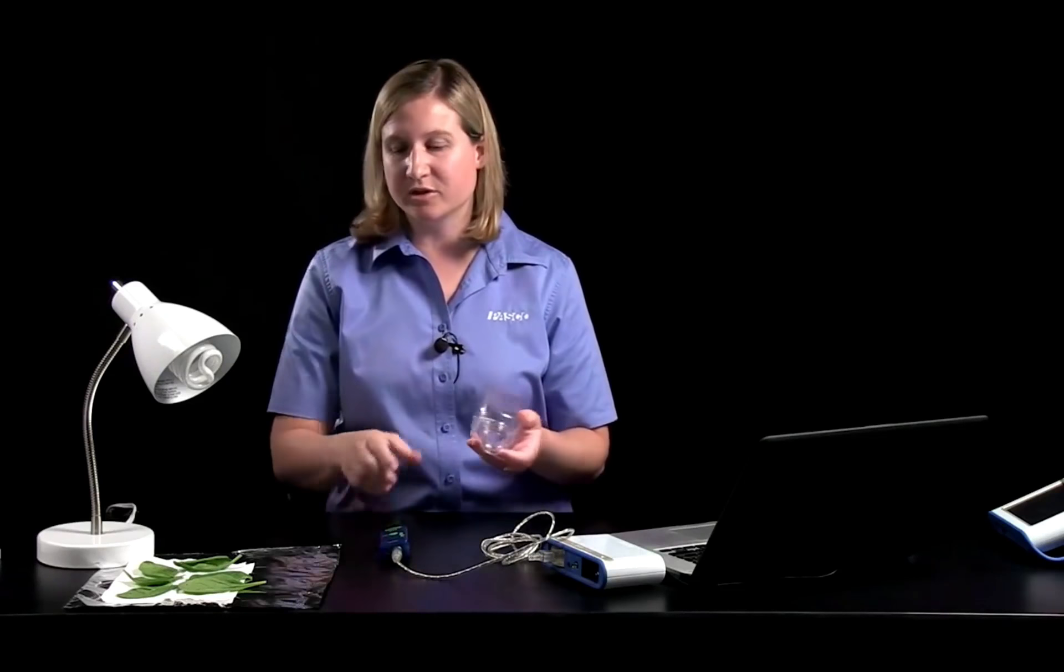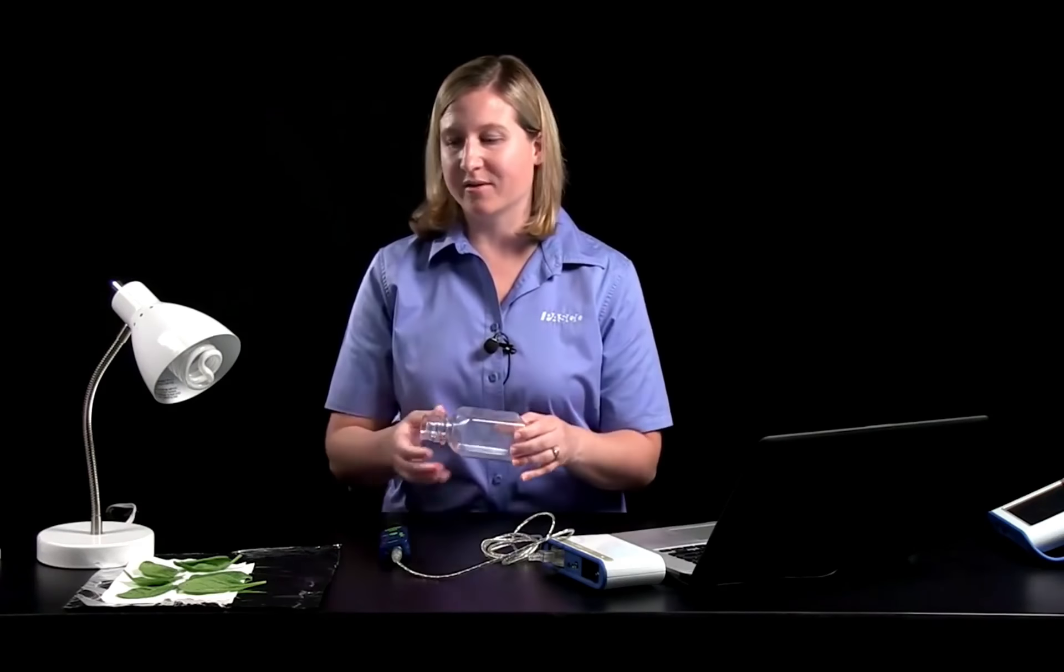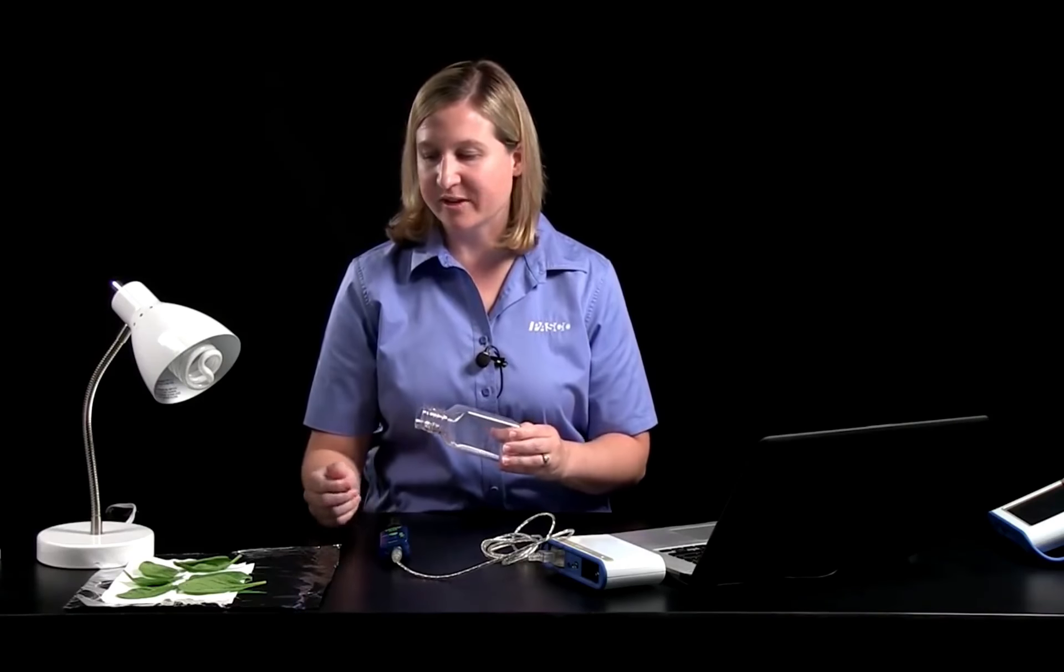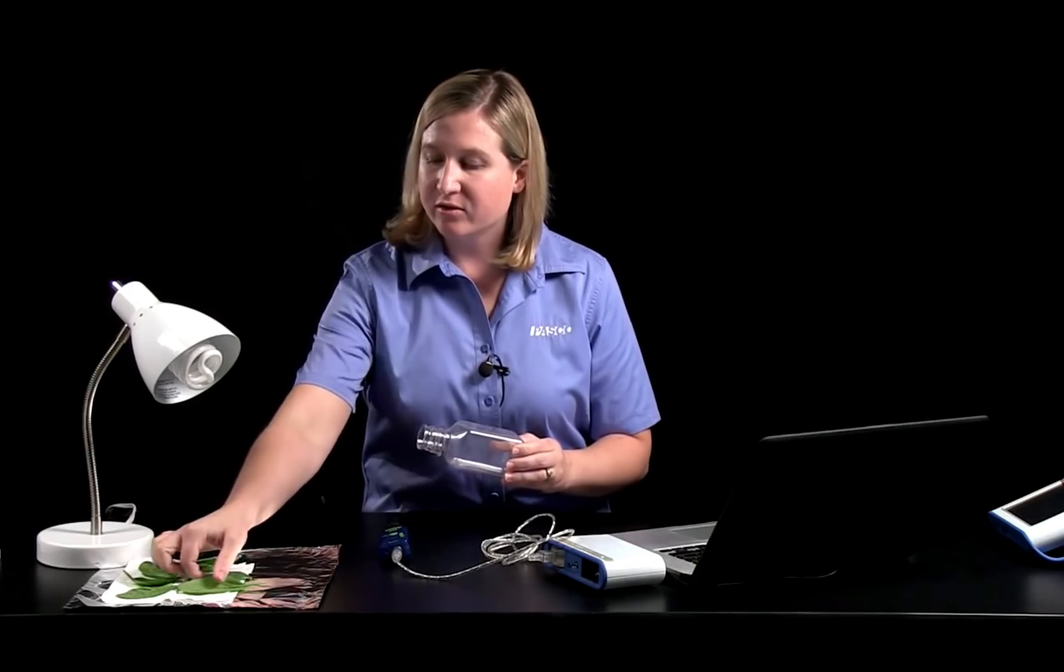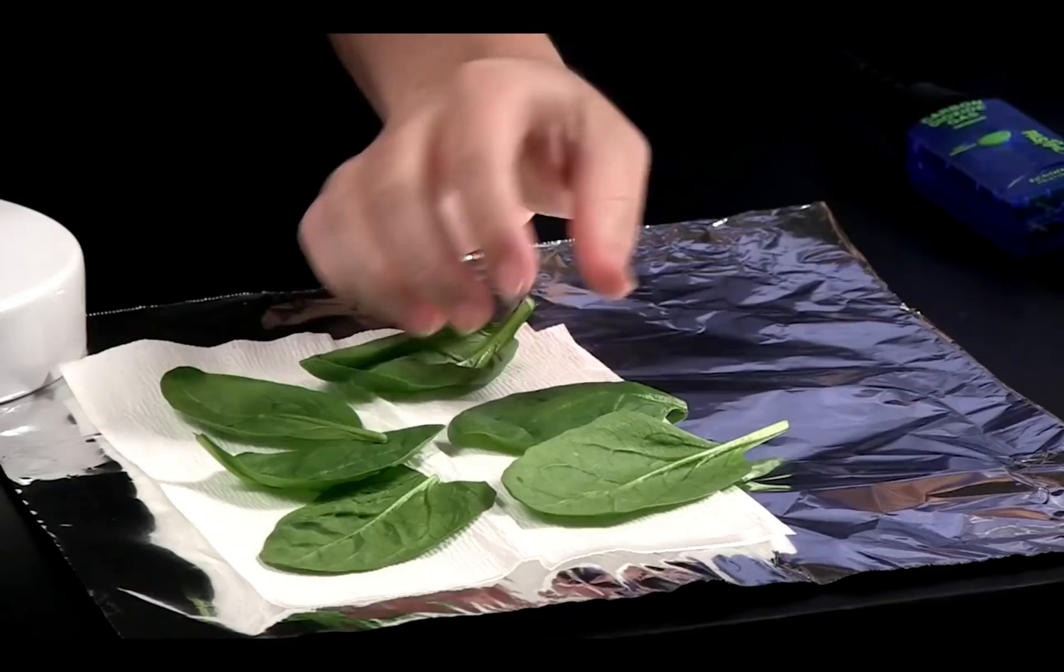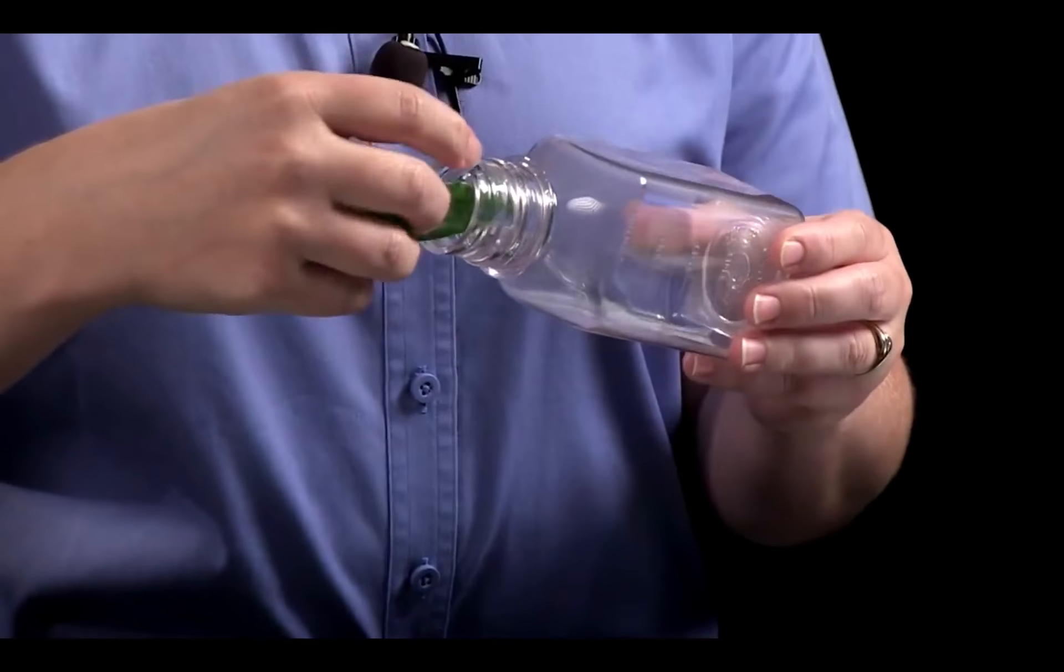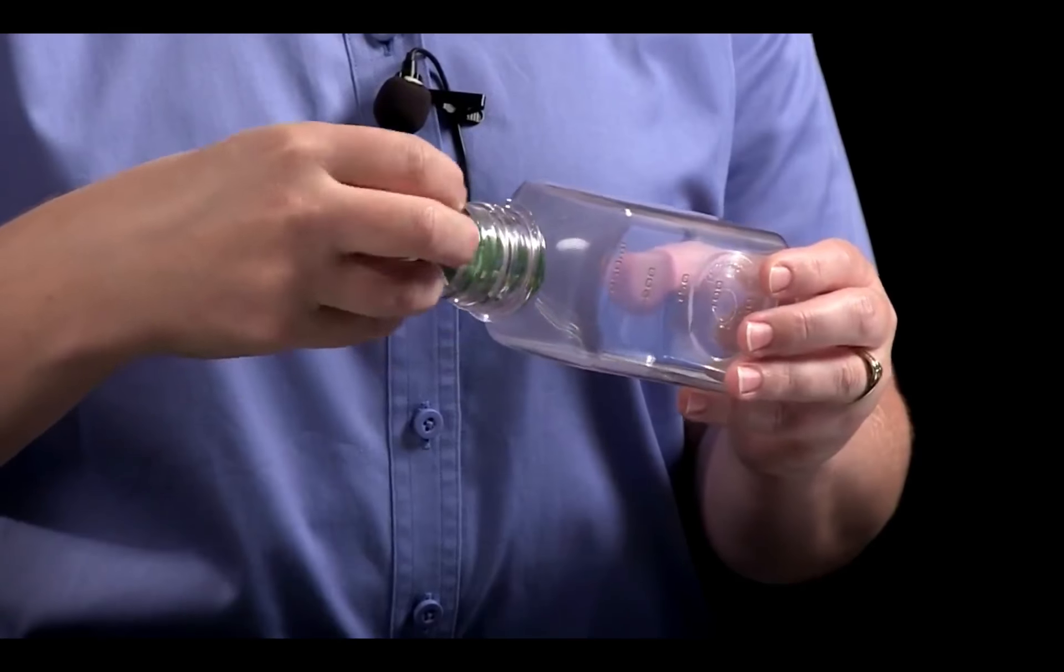Now that the calibration is complete, which I know from the light beginning to blink again, I'm going to remove the carbon dioxide sensor from my sampling bottle. I'm going to place one or two spinach leaves into the bottle. It just depends on the size of your spinach leaves.